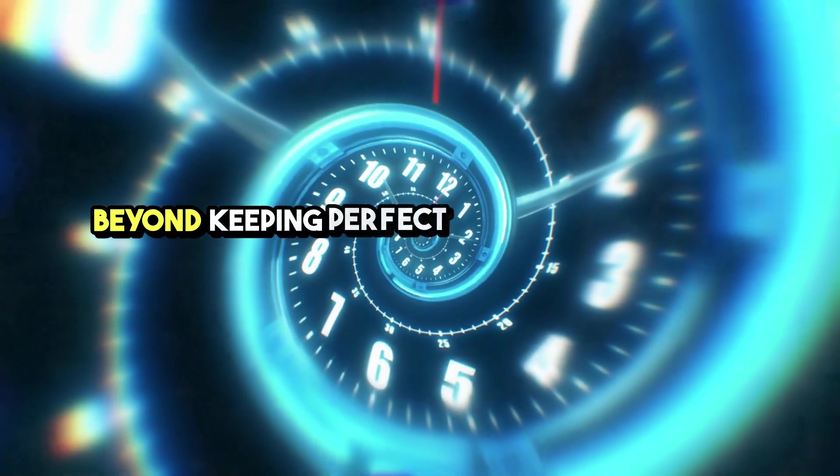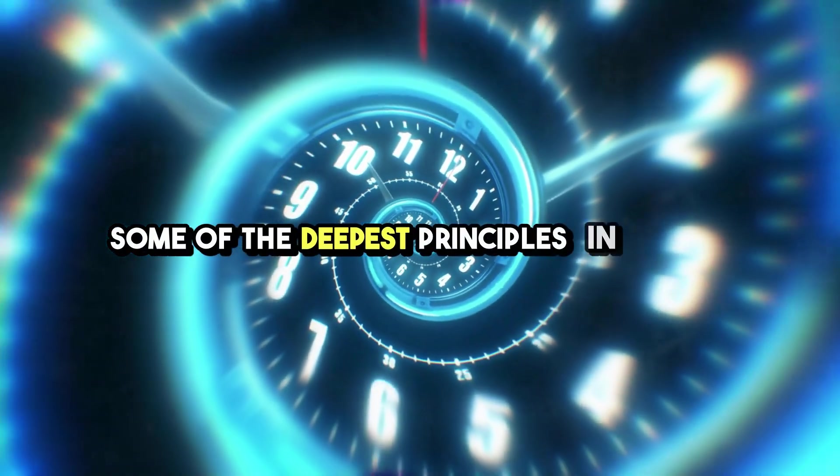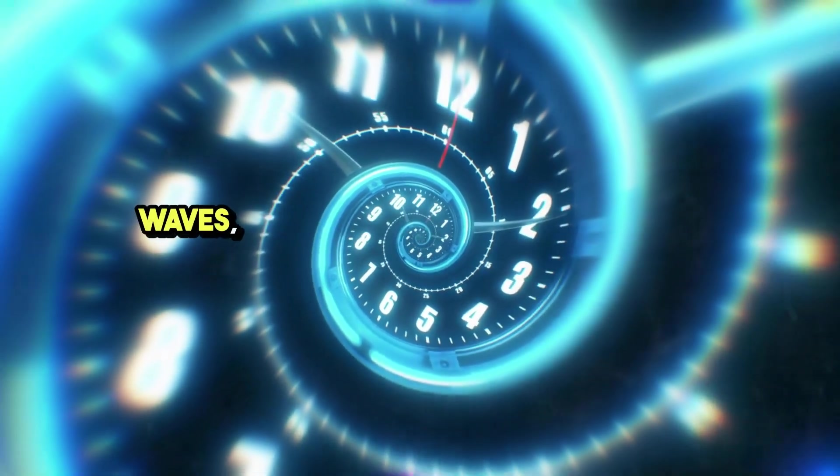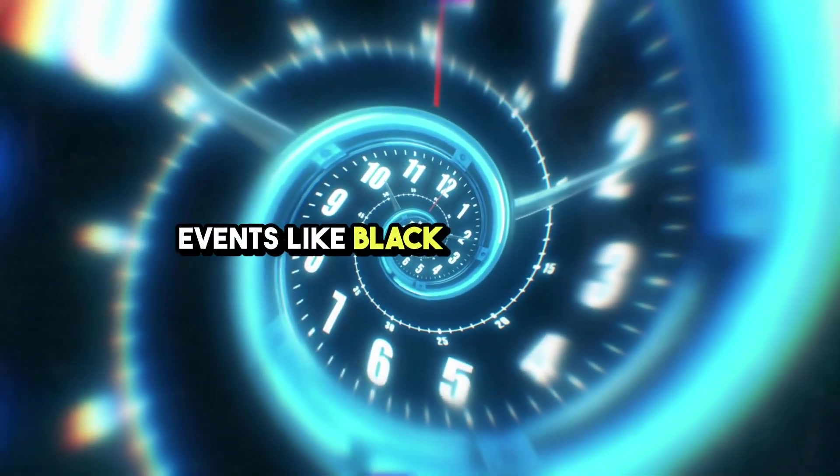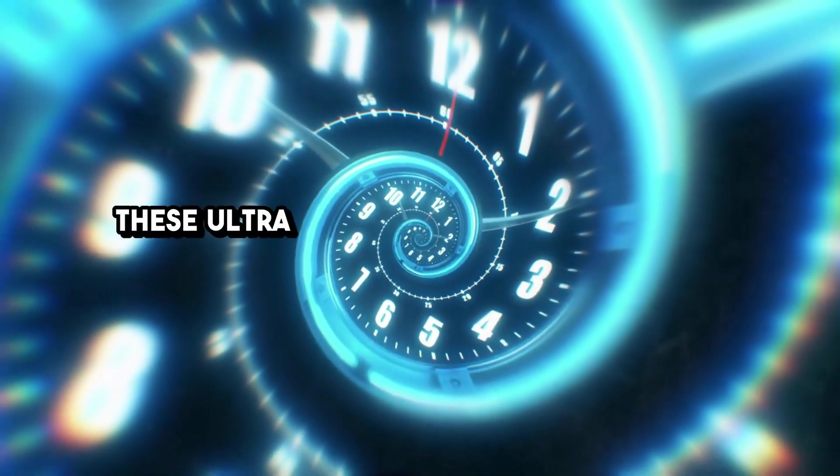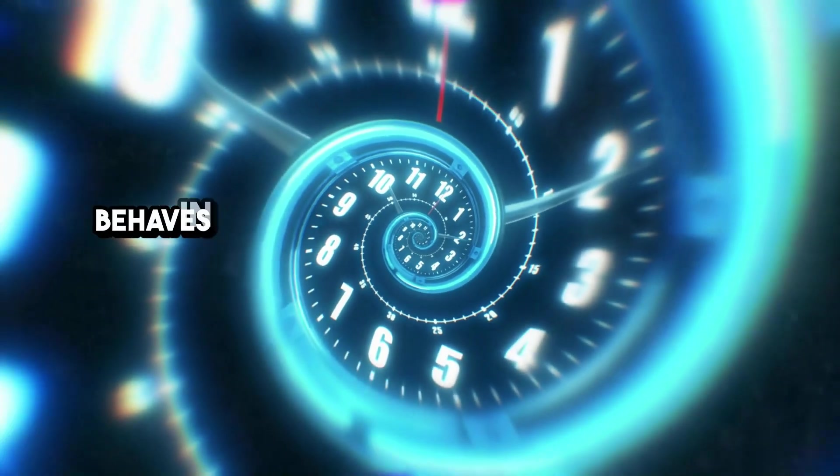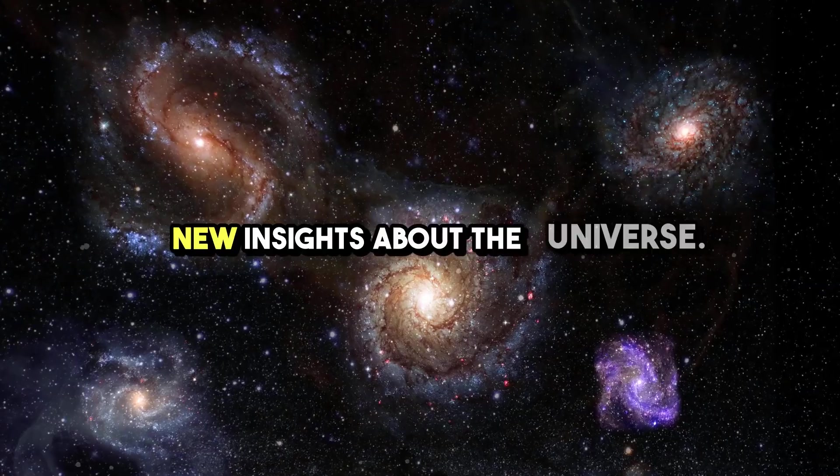Beyond keeping perfect time, atomic clocks like this could also be used to test some of the deepest principles in physics. Scientists could use them to detect gravitational waves, ripples in space-time caused by cataclysmic events like black hole mergers. These ultra-sensitive clocks could also help us study how Einstein's theory of relativity behaves in extreme conditions, potentially leading to new insights about the universe.